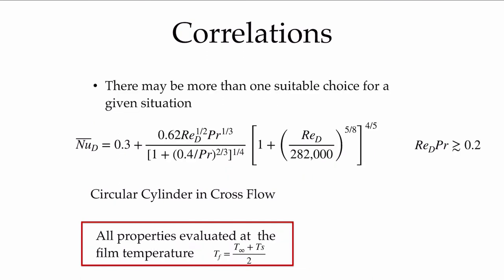Very often you'll find more than one correlation is a suitable choice for a given situation, even within a given textbook. But certainly if you go to the range of textbooks and the broader heat transfer literature, you'll find many different choices for correlations. This is an attempt to accumulate all of the results in the previous table for all the different flow regimes for a circular cylinder into a single, and much more complicated, correlation which captures that whole range.